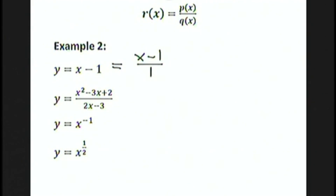y equals x squared minus 3x plus 2 over 2x minus 3 is a rational function, because it's a quotient of a second degree polynomial divided by a first degree polynomial. y equals x to the minus 1 is also a rational function — it could be written as 1 over x, which is the quotient of the polynomial 1 divided by the polynomial x. So negative exponents are okay for rational functions. However, x to the one-half, or the square root of x, is not a rational function — roots or fractional exponents are not allowed.